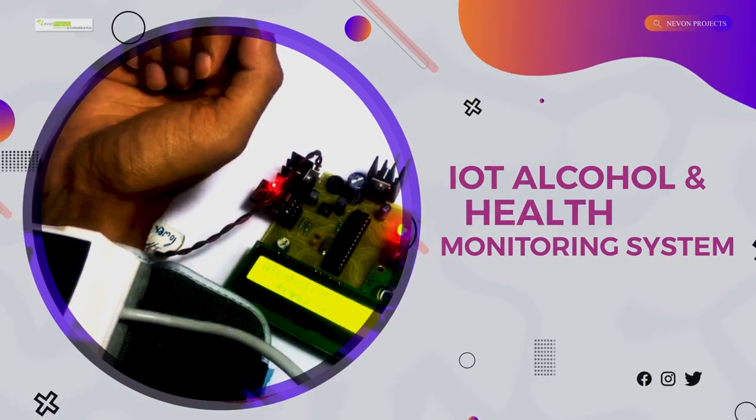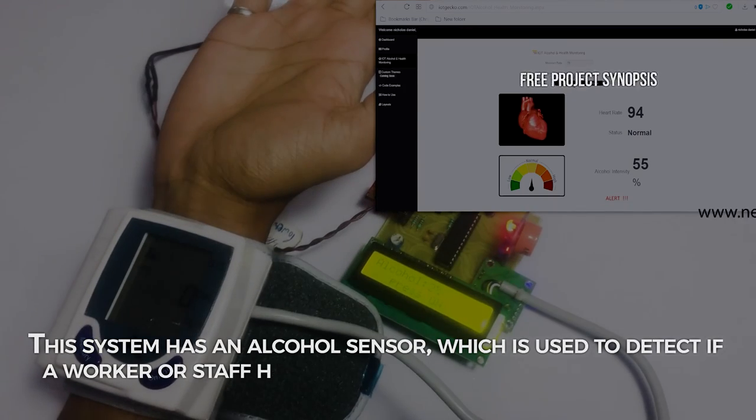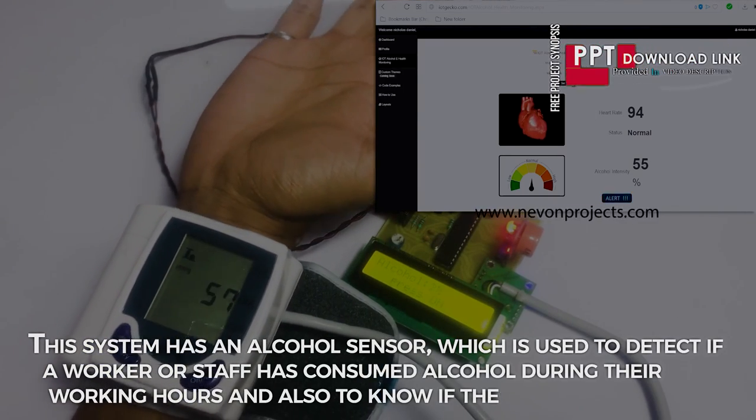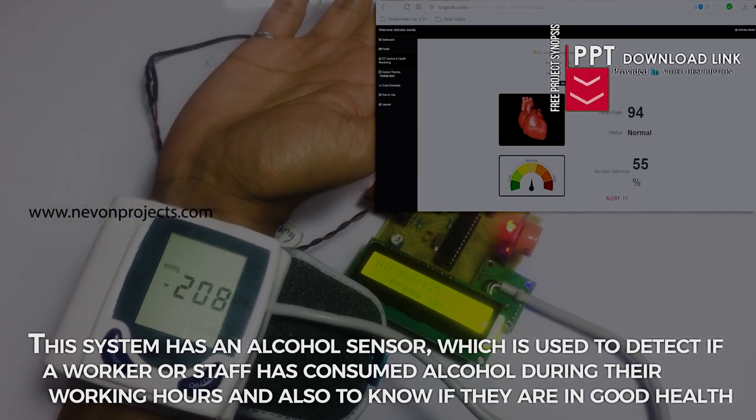IoT alcohol and health monitoring system. This system has an alcohol sensor which is used to detect if a worker or staff has consumed alcohol during the working hours and also to know if they are in good health.